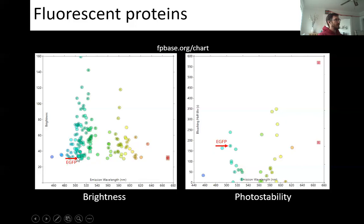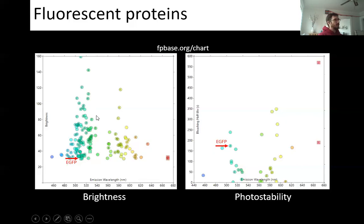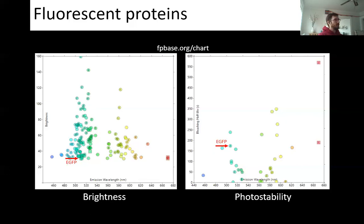This is something to keep in mind if you're starting from scratch — maybe look at some newer fluorescent proteins. Wherever you see a '2' or '4' annotation, that means it's a dimer or tetramer, so although it might be super bright, you might not want to attach a tetramer to your protein of interest as it could inhibit its functionality.